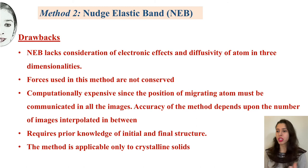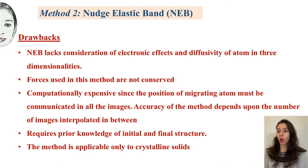There are several drawbacks with Nudged Elastic Band. The diffusivity of the atom is not understood in three dimensions, since it only gives the idea of one single atom jump. The forces in this method are not conserved. It is computationally expensive because the position of the migrating atom must be communicated across all intermediate images. The accuracy depends upon the number of images in between. It requires prior knowledge of the initial and final structure, and it is applicable to crystalline solids only.